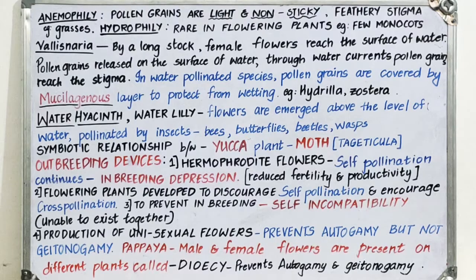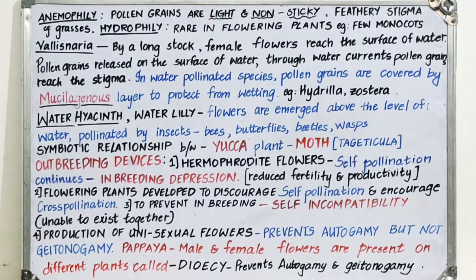In the chapter Sexual Reproduction in Flowering Plants, it is mentioned that the body of the animal gets a coating of pollen grains. Some animals are also involved in pollination — they are sticky, and when the animal carrying pollen on its body comes in contact with the stigma, pollination occurs. This happens in the case of some large animals.